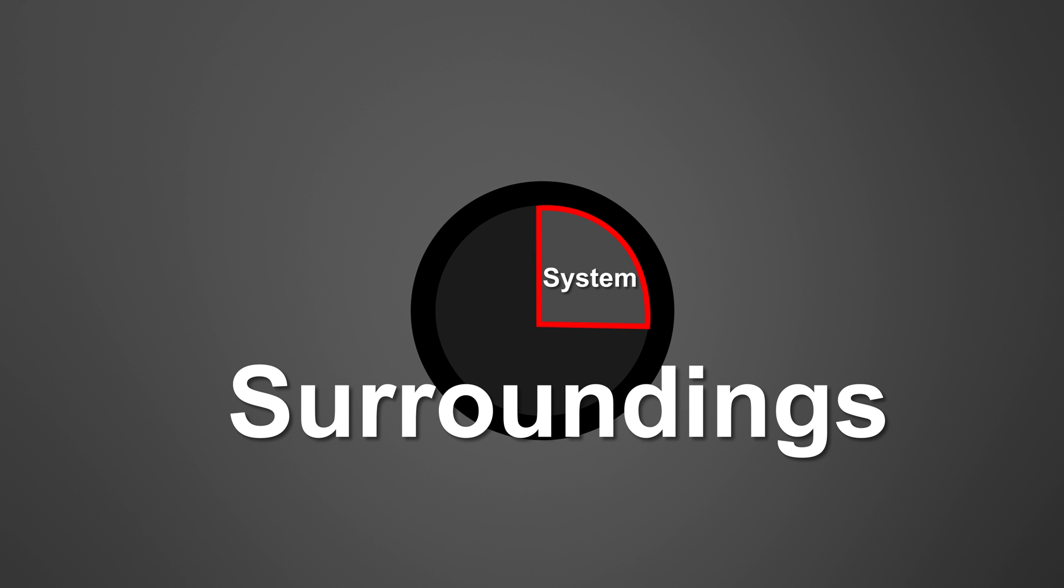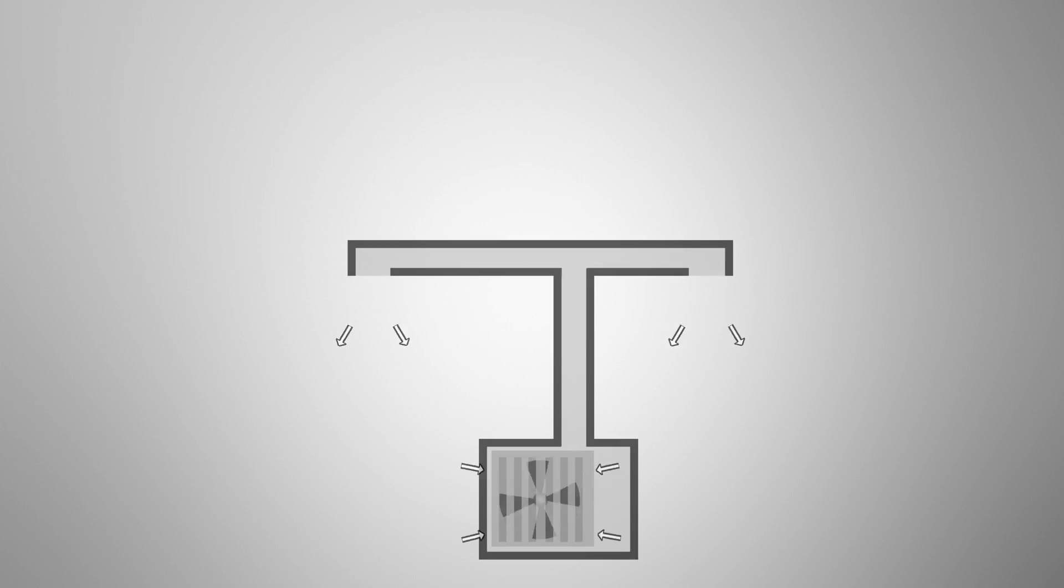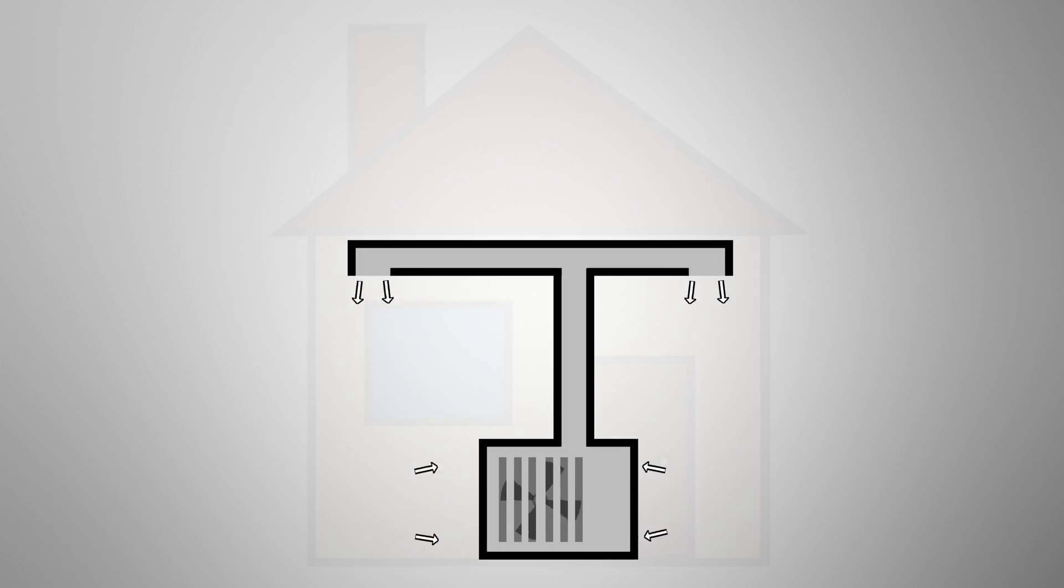Interestingly, since we can define our system as we wish, they can also include just a portion of the object, everything else being the surroundings. Engineers, for instance, might think of a ventilation system in this way, with the building being the surroundings.